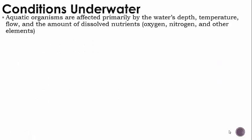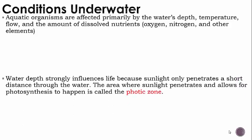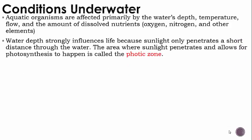Ecosystems and water. Let's talk about conditions underwater. Aquatic organisms that live in the ocean, or any water, are affected primarily by the water's depth, the temperature of the water, the flow of the water, and the amount of dissolved nutrients like oxygen, nitrogen, and other elements.